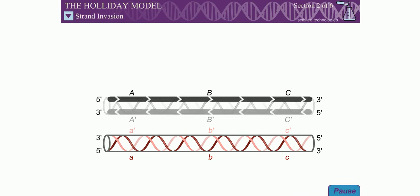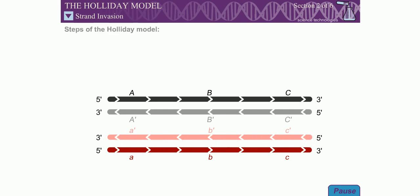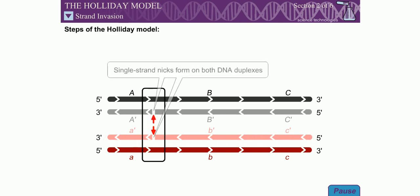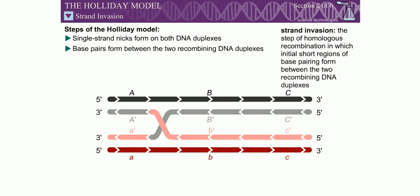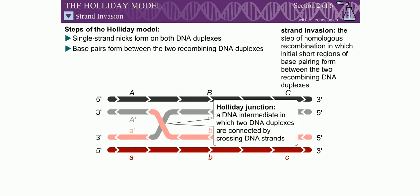In the first step of the Holliday model, single-strand nicks form at identical positions in each DNA duplex. DNA strands near the nick sites peel away from their complementary strands and base pair with the homologous duplex. This step is called strand invasion. The DNA intermediate in which two DNA duplexes are connected by crossing DNA strands is called a Holliday junction.